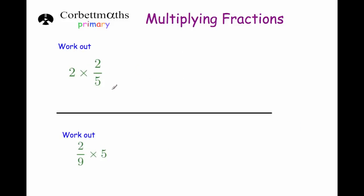We can also work it out even if the numerator isn't 1. If I had 2 lots of 2 fifths — well, 2 fifths and another 2 fifths would be 4 fifths. The quick way is to just multiply the numerator by the whole number: 2 lots of 2 fifths is 4 fifths. Similarly, 2 ninths times 5 gives 10 ninths by multiplying the 2 and the 5.